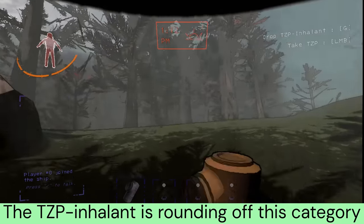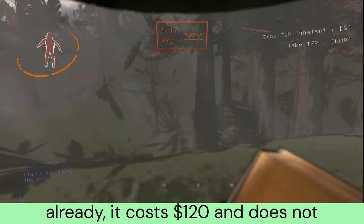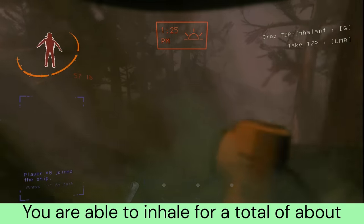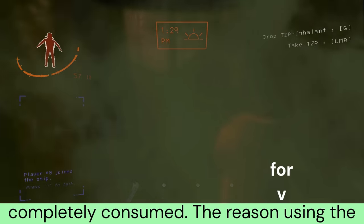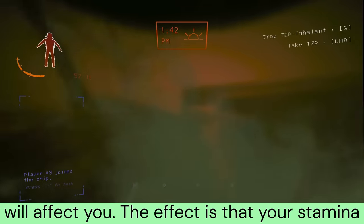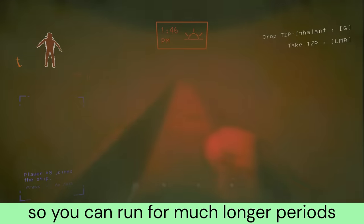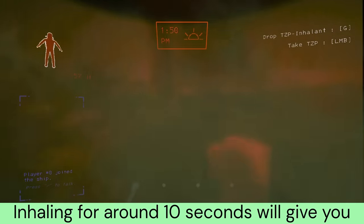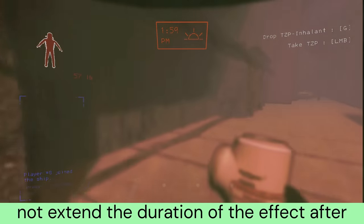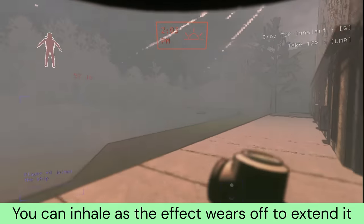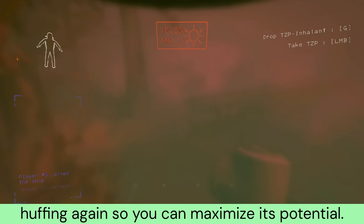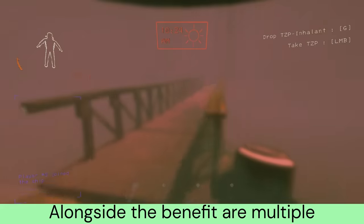The TZP Inhalant is rounding off this category. It costs $120 and does not weigh anything. The Inhalant is used by holding down the left mouse button to inhale the tetrazenylpurine within it. You are able to inhale for a total of about 21 seconds before the Inhalant is completely consumed. The reason for using the Inhalant is that your stamina consumption rate is significantly decreased, so you can run for much longer periods of time. Inhaling for around 10 seconds will give you the maximum effect duration of around 35 seconds.